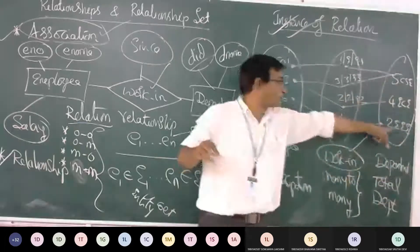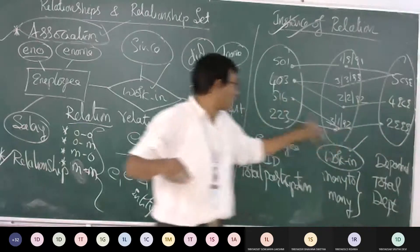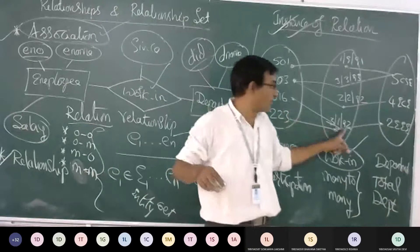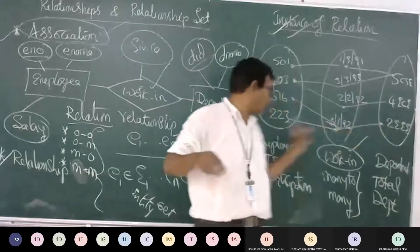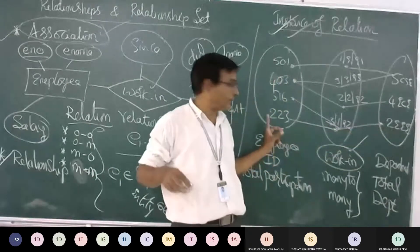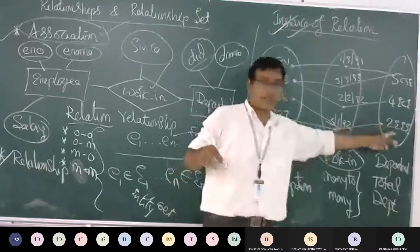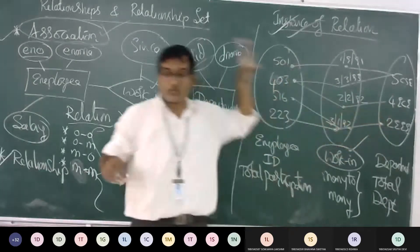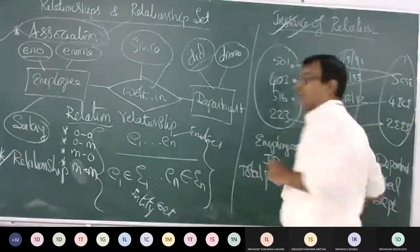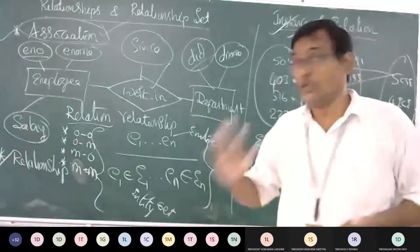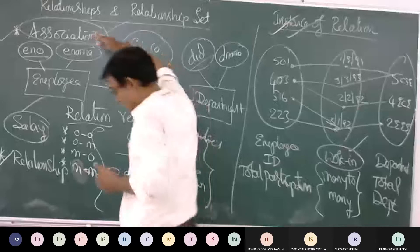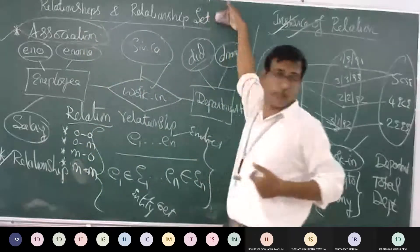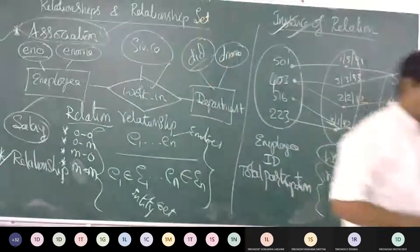Employee ID 516 works in a department from a certain date. Similarly, employee ID 223, from 1992, works in the same department. In this way we make different inferences using associations, relationships, and relationship sets. These are the three items.